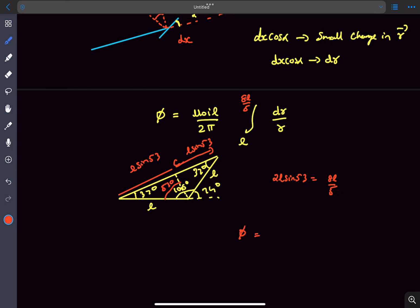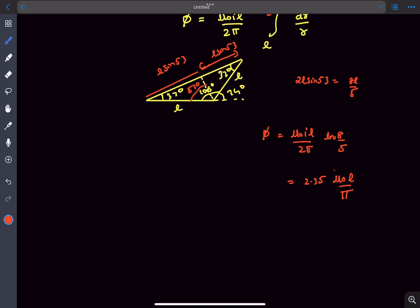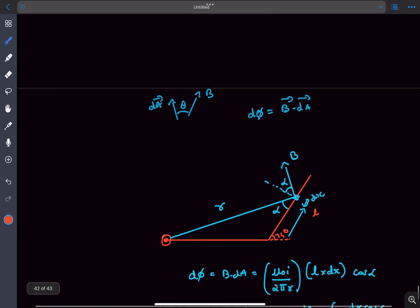If you do the integral, now if you substitute all the values into this you'll get the answer as 2.35 times μ₀L by π. They wanted the coefficient of μ₀L by π, so the answer for that is 2.35.